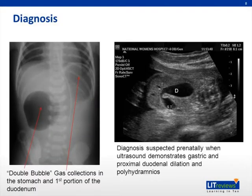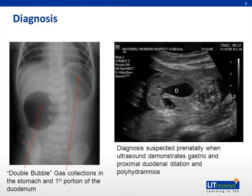Many patients with duodenal atresia have the diagnosis suggested by prenatal ultrasonography. The cardinal signs on ultrasound are polyhydramnios and a double bubble appearance due to a dilated stomach and proximal duodenum. Polyhydramnios is present in 33% to 50% of cases. However, the absence of gastric and proximal duodenal dilation in the presence of polyhydramnios does not exclude the diagnosis, because intrauterine emesis may limit pre-obstructive dilation.